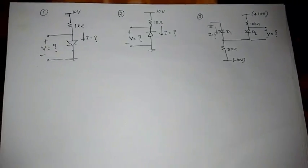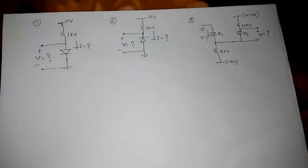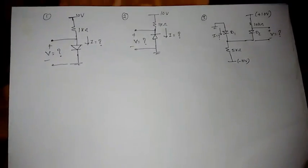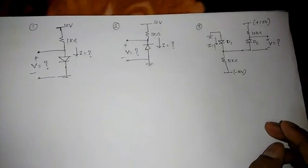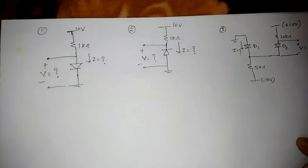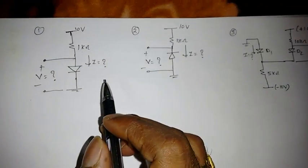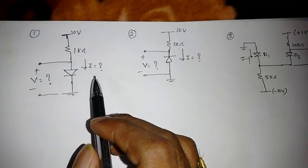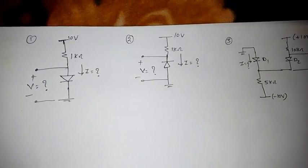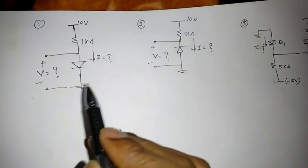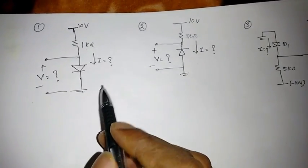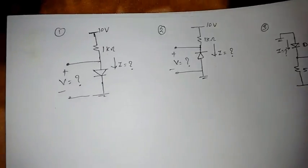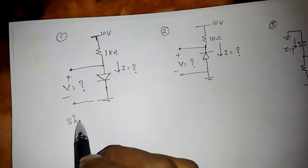In this lecture, we will see some diode problems. I have taken the textbook only. This is one type of example, so we need to find the voltage here. First, we should know if this diode is on or off. The method we need to use is the short circuit method.